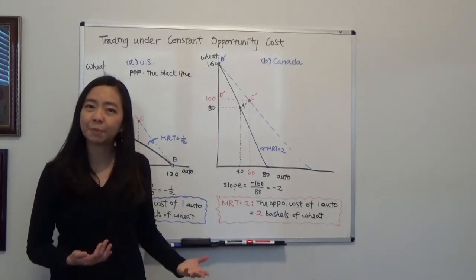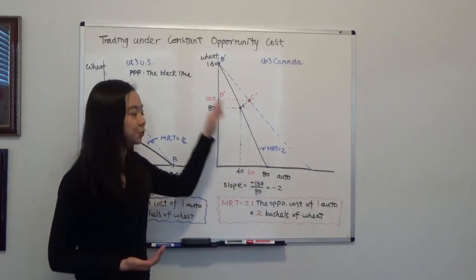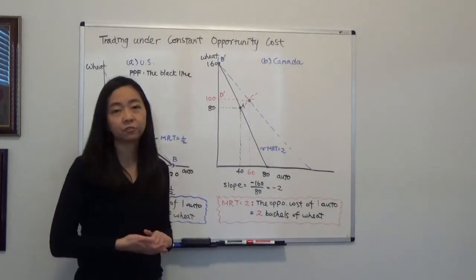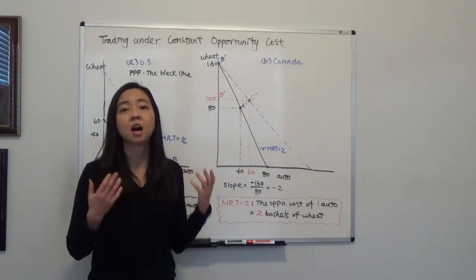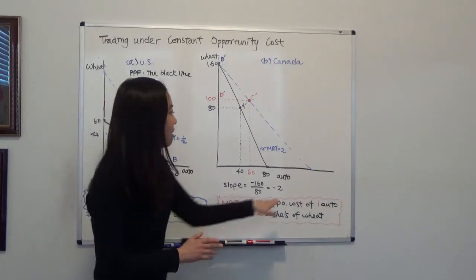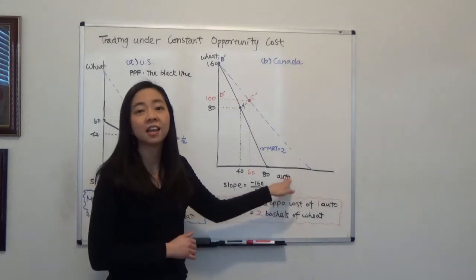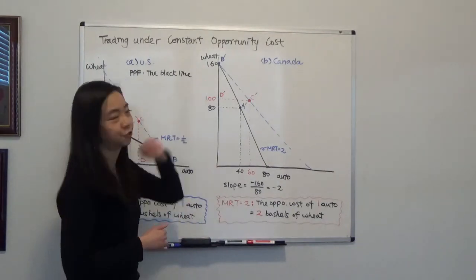because in your future examples, it's not always going to be auto and wheat. So you need to remember, marginal rate of transformation tells you the opportunity cost of the good on the horizontal axis, in terms of the good on the vertical axis.